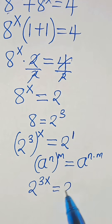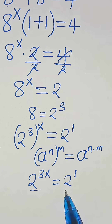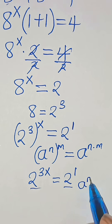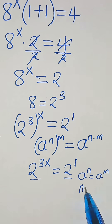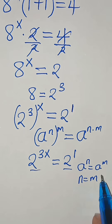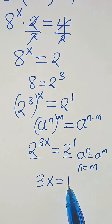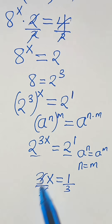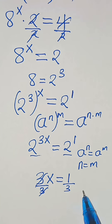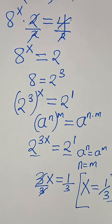This is equal to 2 to the power of 1. Since the bases are common — that is, a to the power of n equals a to the power of m implies exponent n equals m — this means 3x is equal to 1. Dividing both sides by 3, x is equal to 1 over 3, and this is the solution to this problem.